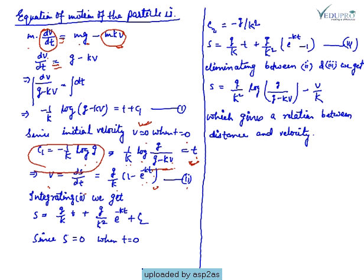So dS equals this one times dt. Integrating: S equals g/K·t plus g/K²·e^(-Kt) plus C2. So this is integration of equation 2. Now if t is 0 and distance is 0, then C2 value we can obtain from equation 3.